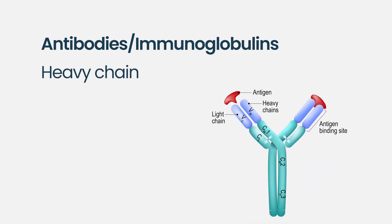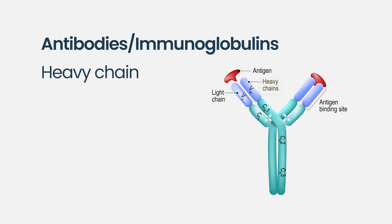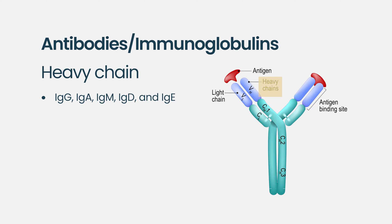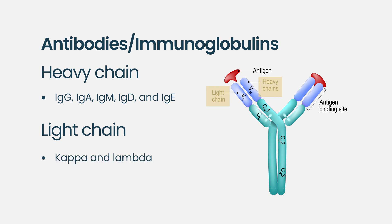There are five different types of heavy chains in humans. Because they're all immunoglobulins, we call them Igs — so we have IgG, IgA, IgM, IgD, and IgE. The top part is called the light chain, and there are two types of light chains: kappa and lambda. You can have all different combinations — IgG kappa, IgA lambda, and so on.